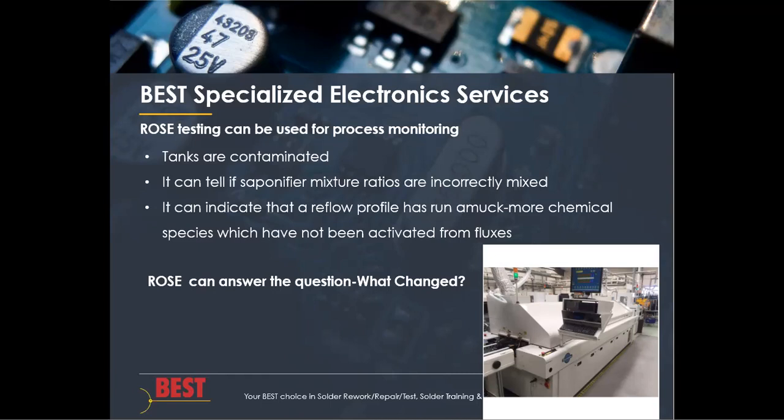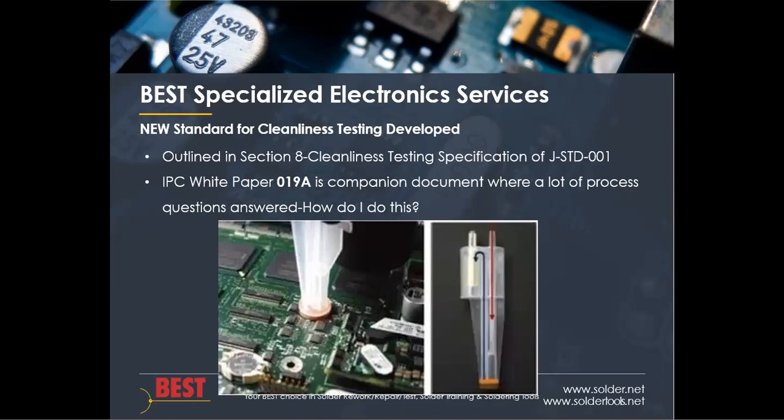ROSE testing can also indicate that a reflow profile has run into problems. For example, if we are not fully activating all our fluxes, we're going to leave behind more active species in terms of residue or soils, and ROSE testing can pick that up. So ROSE testing can still answer the question, what has changed? What has changed is the standard has changed — Section 8 outlines the new testing guidelines for cleanliness and measurement of residues.